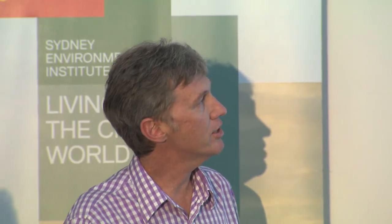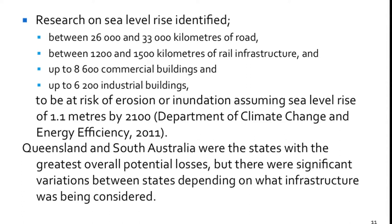Between 26,000 and 33,000 kilometres of road is at risk throughout Australia from sea level rise — based upon 1.1 metres rather than 80 centimetres, which was the earlier IPCC projection. When you model that, you get things like between 1,200 and 1,500 kilometres of rail, up to 80,600 commercial and industrial buildings. It varies significantly between states. Interestingly, Queensland and South Australia were the states with the greatest overall potential loss in aggregate, but there were significant variations between states and between places within states.